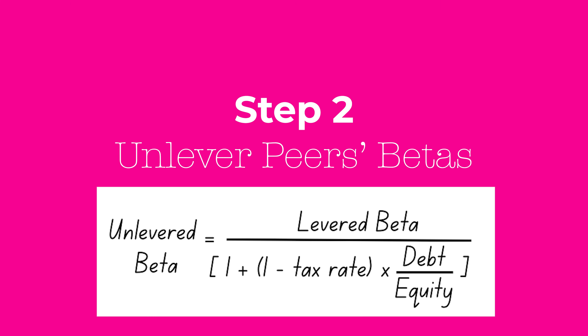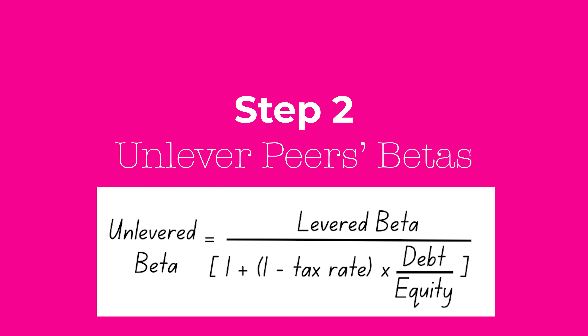There is a formula for it. You take the beta that you got from Bloomberg, stick it into this equation, and you have now unlevered your beta. That is called your asset beta — the unlevered beta where you've removed the leverage from the beta.